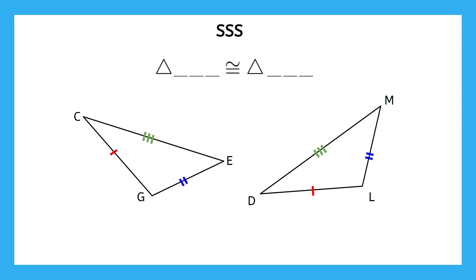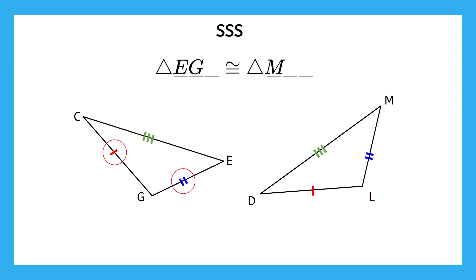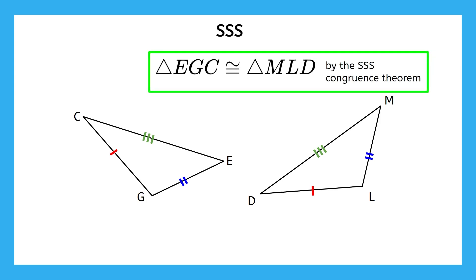We can always start our congruence statement with two triangle symbols and a congruence symbol, then put the corresponding vertices from each triangle in corresponding parts of the statement. I'm going to go through one option — remember, yours might not match mine, but they still need to portray the same information. I put vertex E first, so I have to put vertex M first in the second triangle, because vertex E is between the segments with three marks and two marks, and the same is true for vertex M. Next, vertex G is between the sides with one marking and two markings, and since the same is true for vertex L, I wrote vertex L in the corresponding position. Then we write the remaining vertex from each triangle to finish our statement and write our reason to justify it.